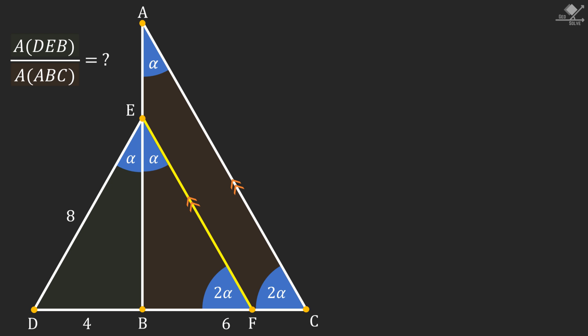Now we have an isosceles triangle with two equal base angles of 2 alpha degrees. So its corresponding sides must be equal. Therefore, the length of the line segment BF will be 4 units and FC will be 2 units.